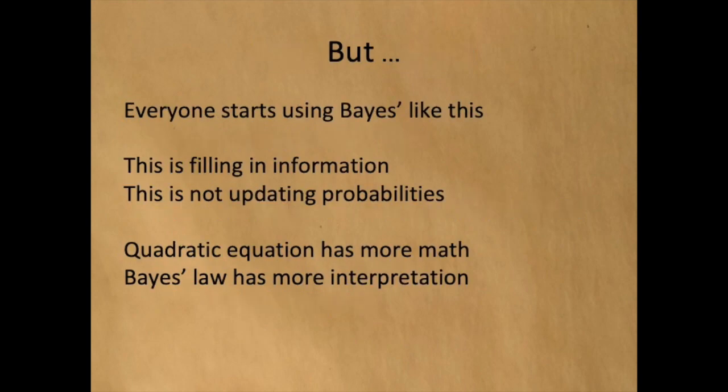Note that everyone who learns Bayes' law starts out using it like this. But this is just filling in information. Before using the equation, we did not know what the probability of A given B would be, and afterwards we do. But consider that before we used the quadratic formula, we didn't know what the roots of x were, and afterwards we did. Are we updating our values of x? Is there any magic here? Note that there's more math in the quadratic equation than in Bayes' law, so the quadratic formula should contain more magic. Using Bayes' law as an equation is completely valid and completely true, but it's missing something.